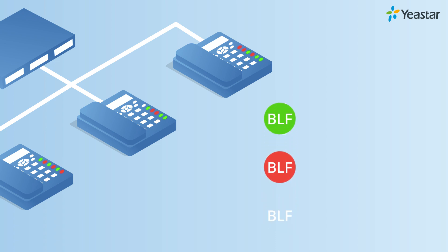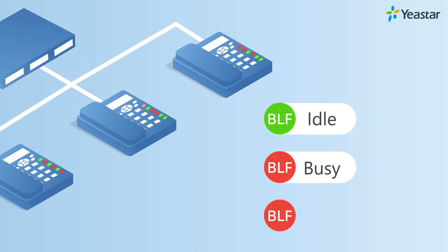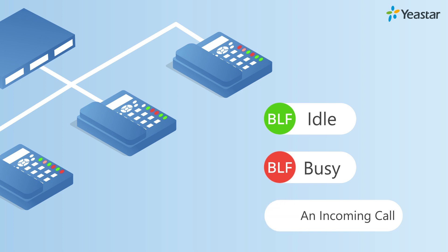For example, green means idle, red means busy, and flashing in red shows an incoming call. The specific effects vary from phone manufacturers.